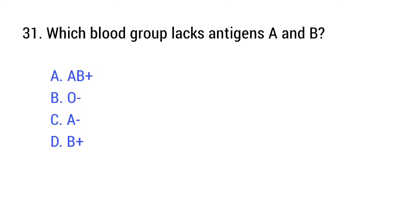Question number 31. Which blood group lacks antigens A and B? The right answer is option B: O-.